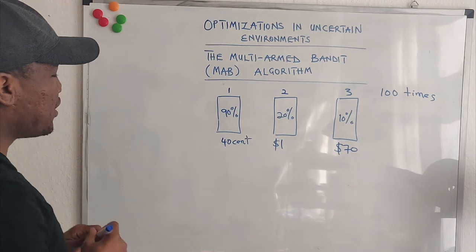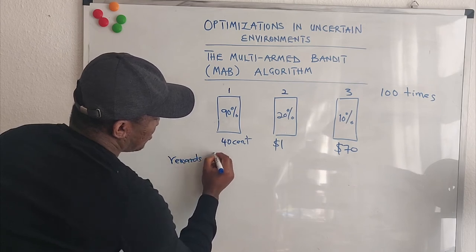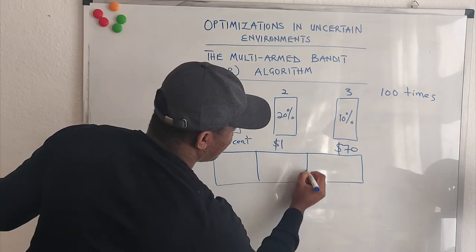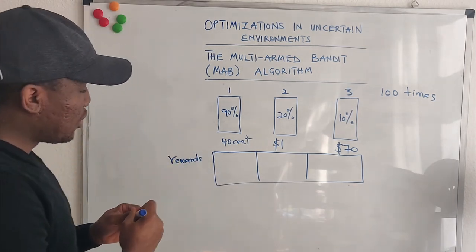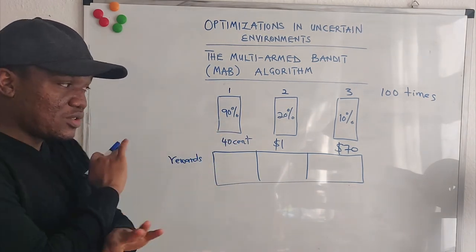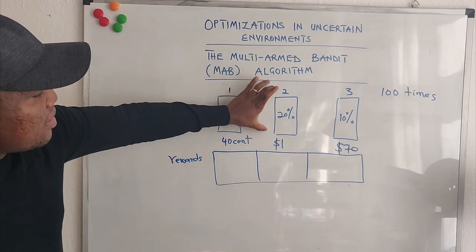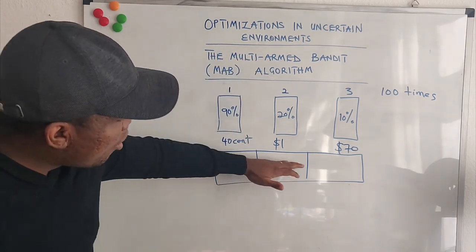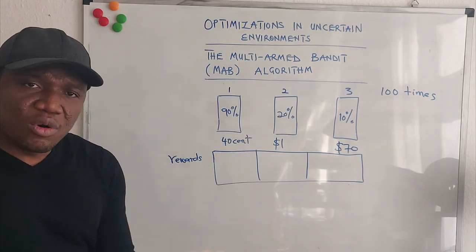Over here, what we are going to do is we will have a list called Rewards. And it's going to be a regular Python list. 1, 2, 3. So the first index of the rewards list is going to store how much money we have made by opening Door 1. The rewards is just concerned with how much money we have made by opening Door 1. The second index is going to store how much money we have made by opening Door 2. And of course, how much money we have made by opening Door 3.